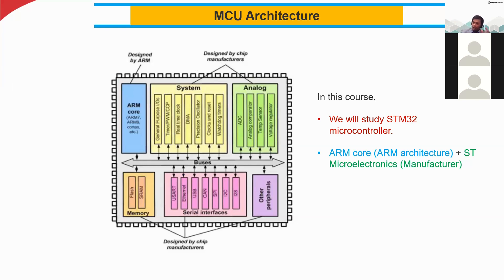For example, when you transfer pictures from your mobile phone to your computer, you use a USB cable. You might also want to use SPI, I2C, or other protocols. As a microcontroller manufacturer, I should give all the options so you can use whatever communication mode you want. We have USART — that is the transmitter-receiver — for wireless communication, Ethernet, USB, and other peripherals such as timers.